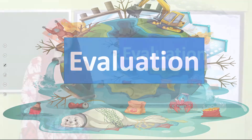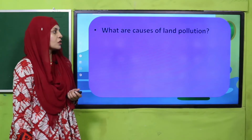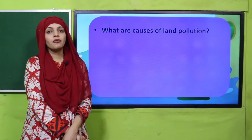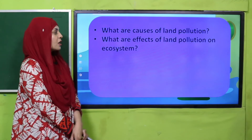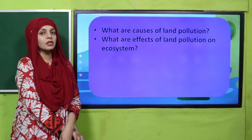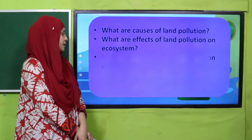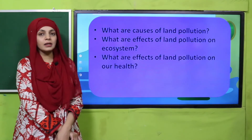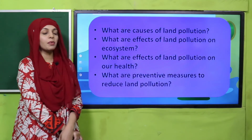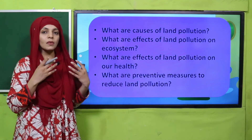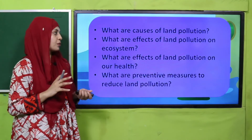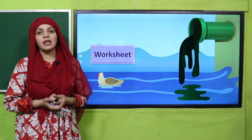Now is the time for evaluation. What are the causes of land pollution? Spraying pesticides, dumping of garbage from factories and homes — these all cause land pollution. What are the effects on ecosystem? They cause infertility of soil, soil erosion, and deforestation — this is how the ecosystem becomes imbalanced. Effects on health include diseases like dysentery, skin diseases, and fever. Preventive measures: plant more trees, treat factory waste to make it less toxic, and recycle to reduce garbage and pollution.